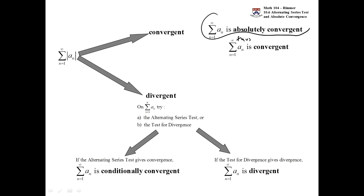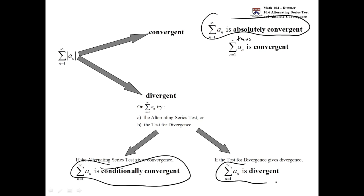So these are our different options: the series could be absolutely convergent, the series could be conditionally convergent, or the series could be divergent. We have to make this distinction about how convergence works with the series. Let's take a look at three examples. First up, we have cosine of nπ all over the root of n cubed.